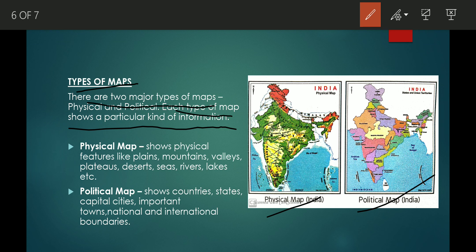Physical maps show physical features like plains, mountains, valleys, plateaus, deserts, seas, rivers, lakes, etc.